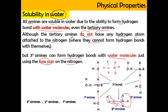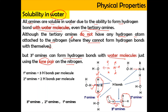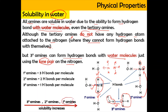In order to determine solubility of amines, we look at the number of hydrogen bonds formed per molecule. The primary amine can form three hydrogen bonds per molecule, the secondary amine can form two, and the tertiary amine can only form one. The more hydrogen bonds formed, the more soluble the amine — so primary amine is the most soluble and tertiary amine is the least soluble.